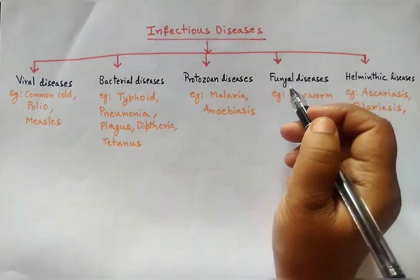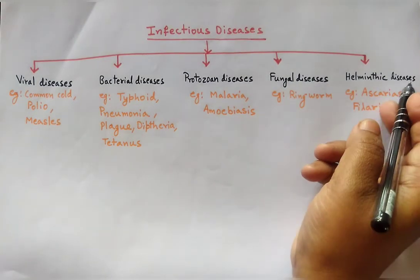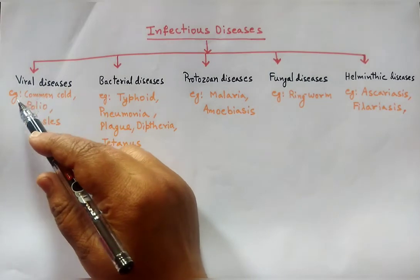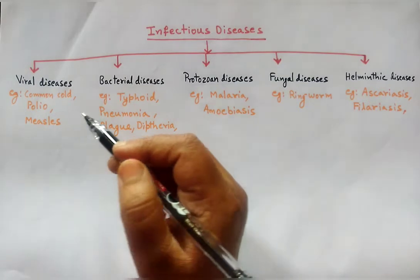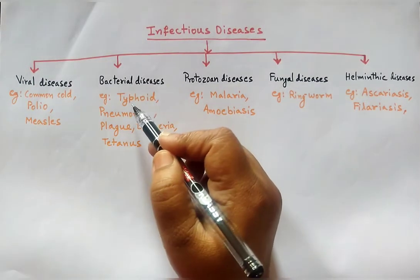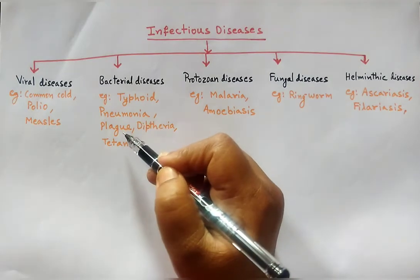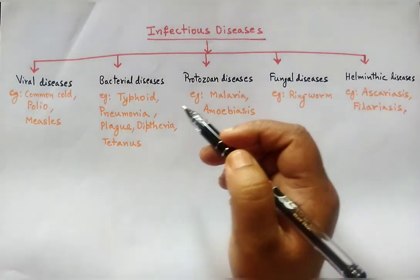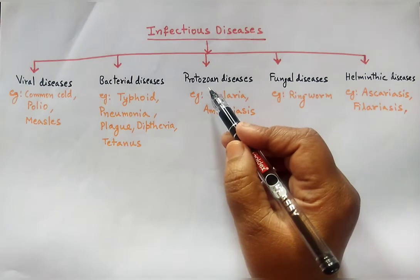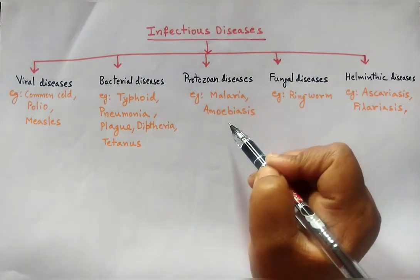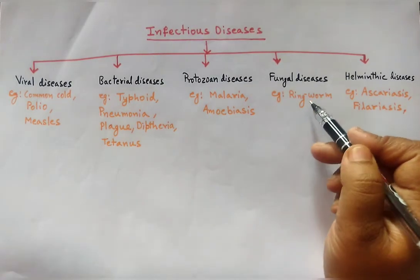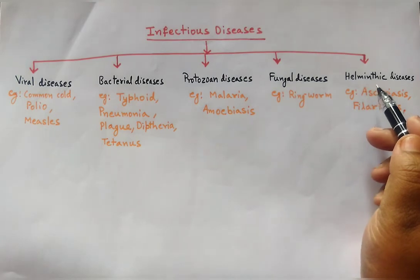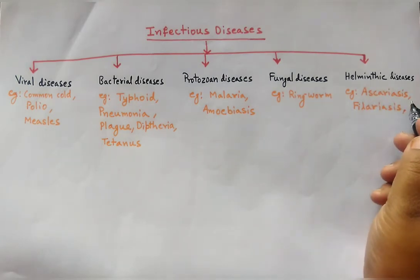Examples of viral diseases are common cold, polio, and measles. Examples of bacterial diseases are typhoid, pneumonia, plague, diphtheria, and tetanus. Examples of protozoan diseases are malaria and amoebiasis. An example of fungal diseases is ringworm. Examples of helminthic diseases are ascariasis and filariasis.